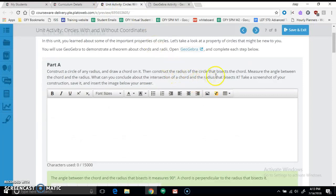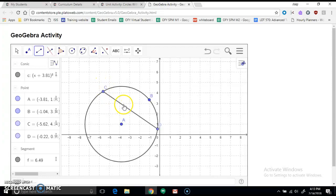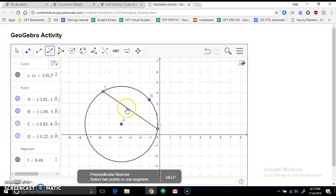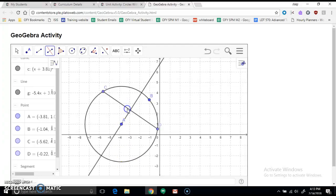Now it says construct the radius of the circle that bisects the chord. So we're going to make a perpendicular bisector through this chord, and since it's a radius, it needs to start at the center. So I'm going to click on Perpendicular Bisector. It says select two points or one segment. So I'm going to click on the segment, and then I'm going to click on the point that I want it to go through. So there we go.